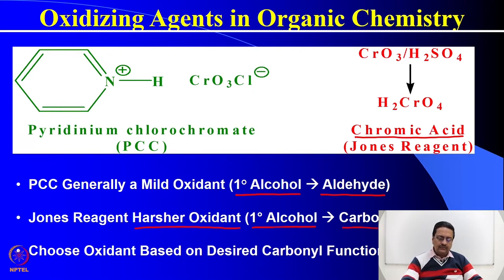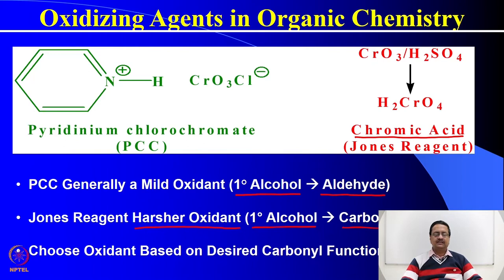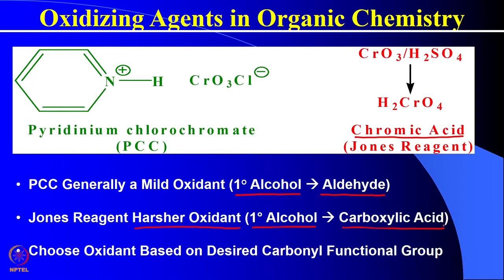A carboxylic acid can be formed using Jones reagent, which can be easily prepared in the lab using potassium dichromate and concentrated sulfuric acid. So what we do is choose the oxidant based on the desired carbonyl functional group that we want upon oxidation.